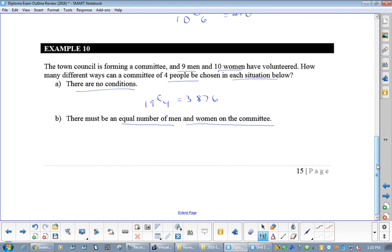Now there must be an equal number of men and women on the committee. What's that saying? How many men? 2. So you have 9 men, I will choose 2. You have 10 women, I will choose 2. And you get 1,620. Yes. Multiply together.